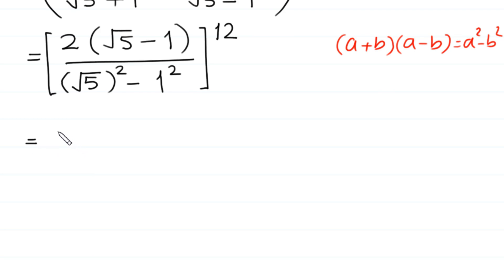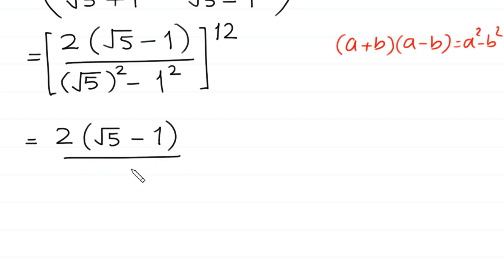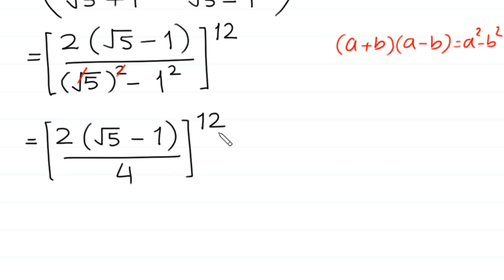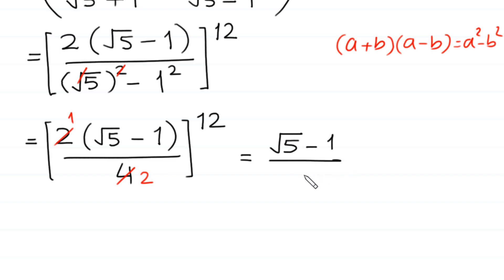Next, 2 times (square root of 5 minus 1) divided by (5 minus 1), since the square cancels with the square root and 1 squared equals 1, giving 4, whole to the power 12. Now, the 2 and the 4 simplify: 2 divided by 4 gives one-half. So the expression becomes (square root of 5 minus 1) divided by 2, whole to the power 12.